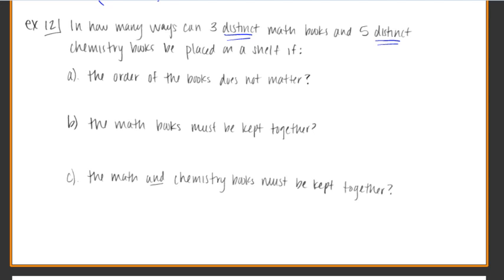And we have five distinct chemistry books be placed on the shelf if the order of these books does not matter. Okay, so how I think about this is pretend I have my three math books and my five chemistry books, and they're all sitting on the floor, just jumbled up. And since order doesn't matter, then you can close your eyes, you're going to reach down and pick up a book. How many options do you have for that first book?